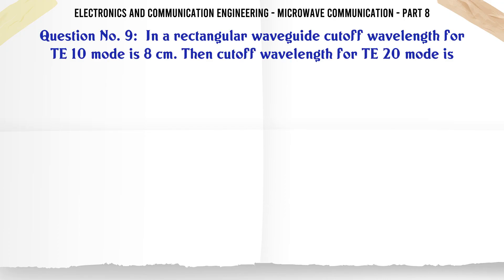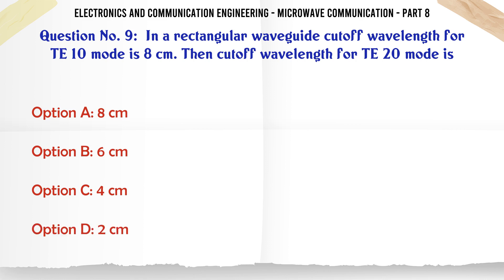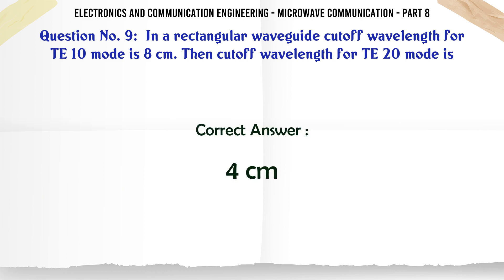In a rectangular waveguide, the cutoff wavelength for TE10 mode is 8 cm. Then the cutoff wavelength for TE20 mode is — A. 8 cm, B. 6 cm, C. 4 cm, D. 2 cm. The correct answer is 4 cm.